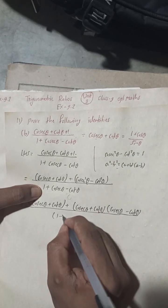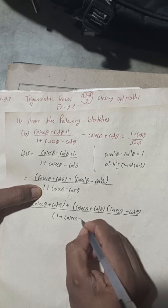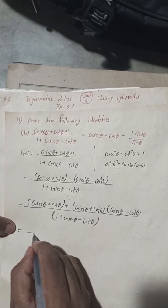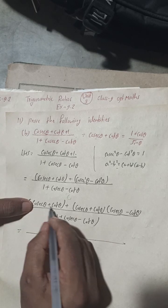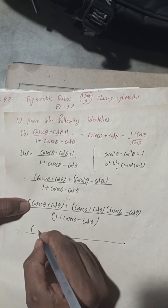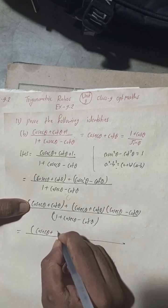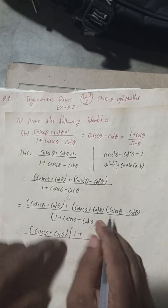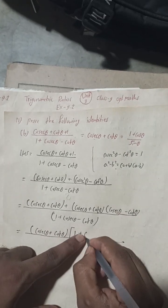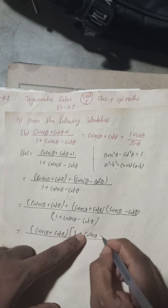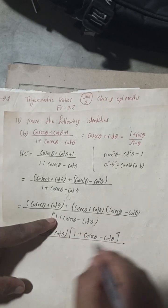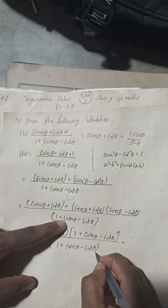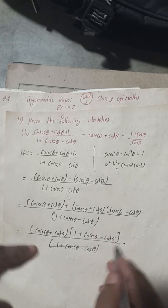The denominator part remains (1 + cosec θ − cot θ) as it is. Now taking (cosec θ + cot θ) common from the numerator, we get (cosec θ + cot θ) times (1 + cosec θ − cot θ) in the numerator. The denominator is also (1 + cosec θ − cot θ), so they cancel.